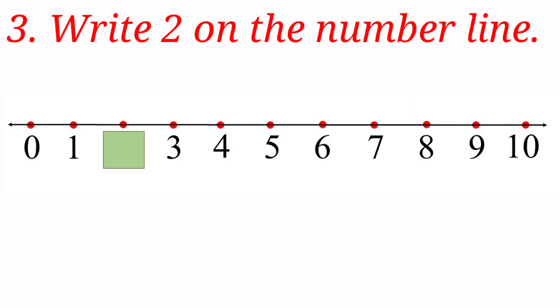Look at the third question. Write 2 on the number line. Here they have given number line. First we will see the numbers. 0, 1. Here they have given a box. Then 3, 4, 5, 6, 7, 8, 9, 10. We are going to write number 2. After 1, the number is 2. So we are going to write 2 in this box.